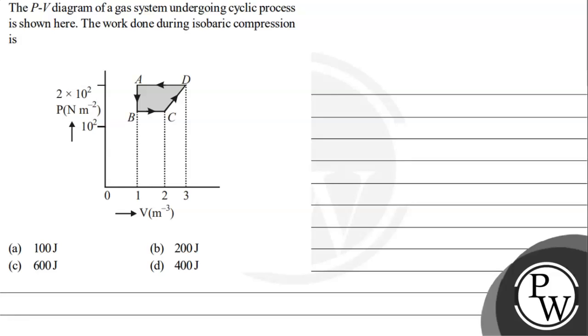Hello guys, let's read the given question. The question says the PV diagram of a gas system undergoing cyclic process is shown here. The work done in isobaric compression is.